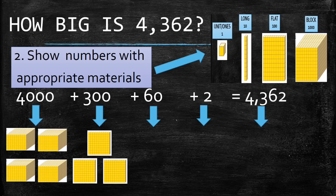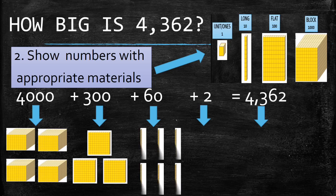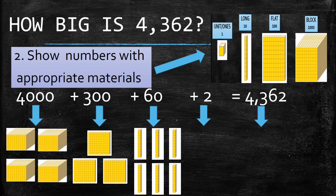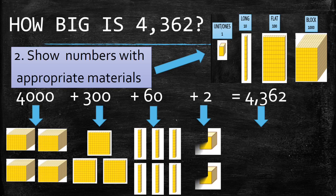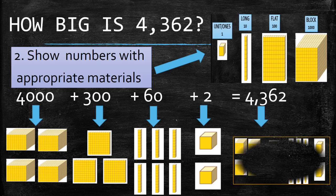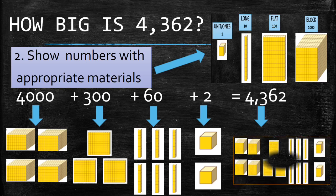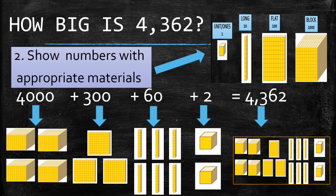How many longs to represent 60? We're going to use 6 longs to represent 60. How about 2? How many units are we going to use? We're going to use 2 units, which is equivalent to 4,362.